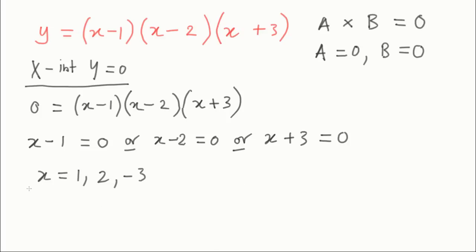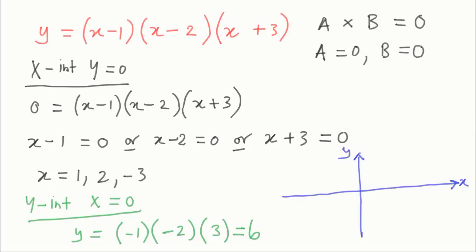To find the y-intercept, you always let x equal zero, and y would then equal bracket minus 1, minus 2, multiply by 3, and that all equals 6.